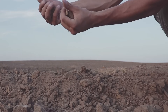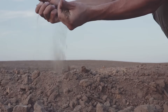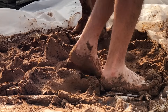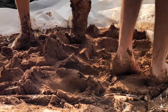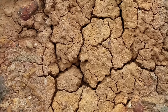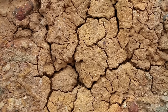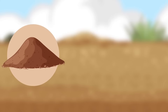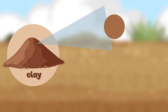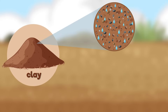Clay has very small particles. These tiny particles pack closely together, making it good at holding water, but it doesn't let air through easily. Because of this, clay can be hard for plant roots to move through. Like sand, clay does not contain much humus.